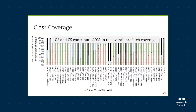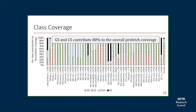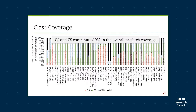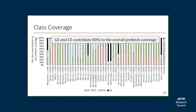Let's look at the coverage provided by each class. On average, the GS and CS classes contribute almost 80% of the total coverage. However, there are applications like MCF where CPLX is actually doing well, and applications like OMNET++, PerlBench, and Xalan where the tentative next-line also does well. So overall, each class has its own utility, but GS and CS classes contribute the majority of the coverage.